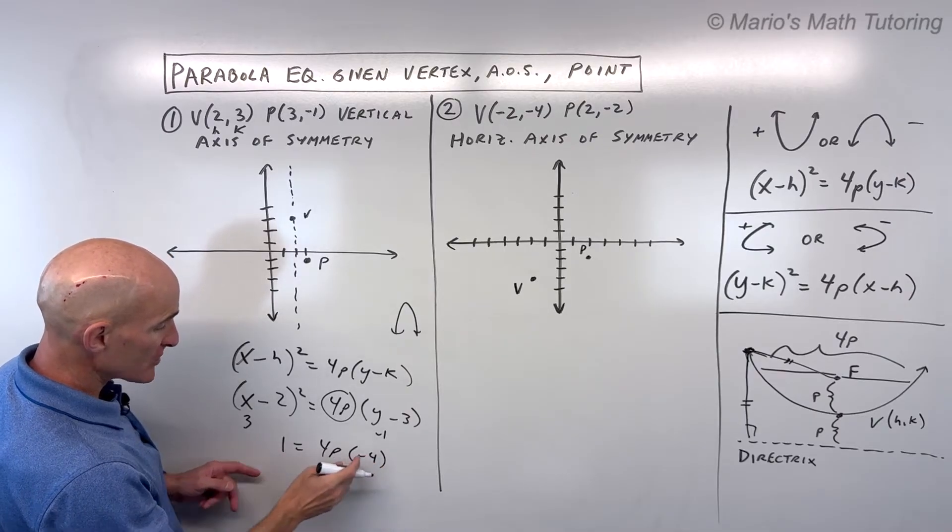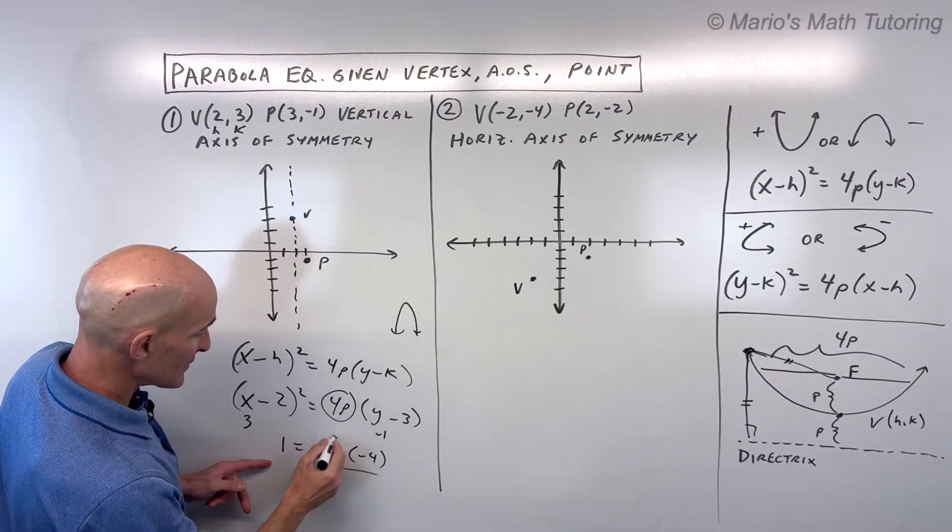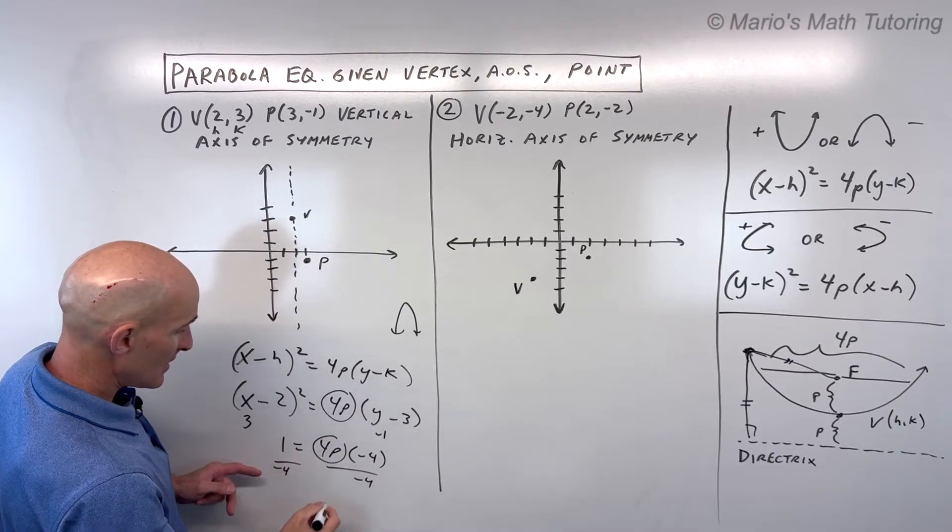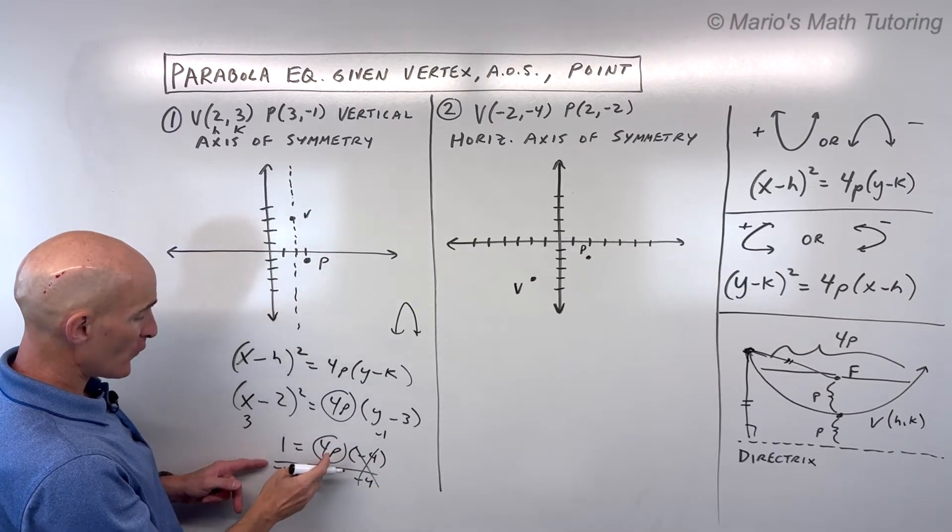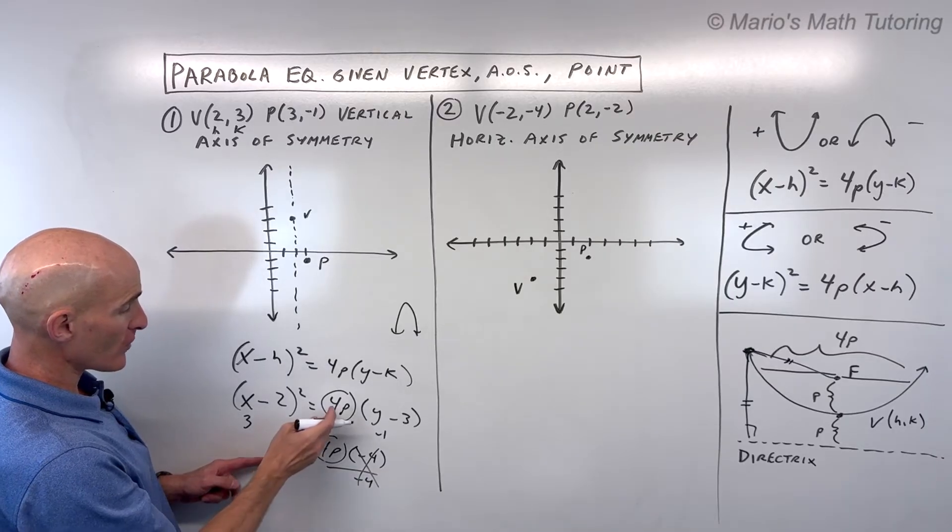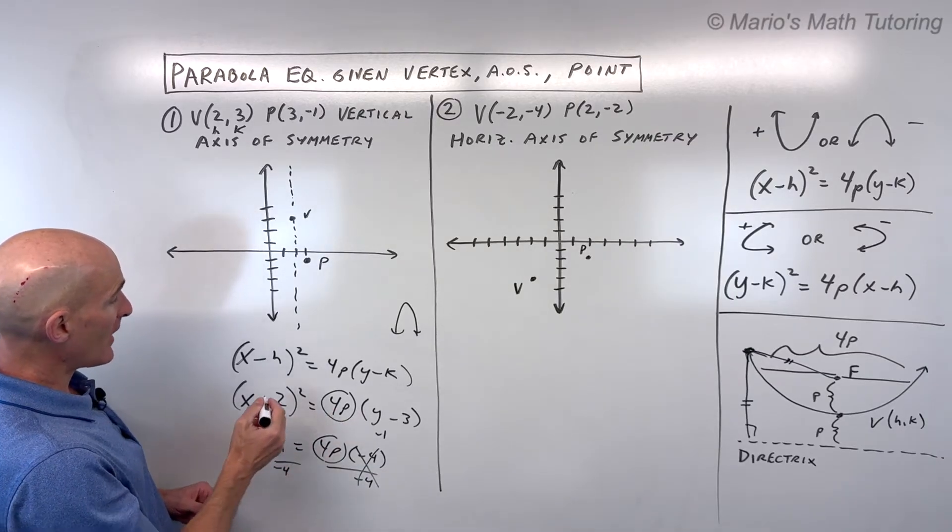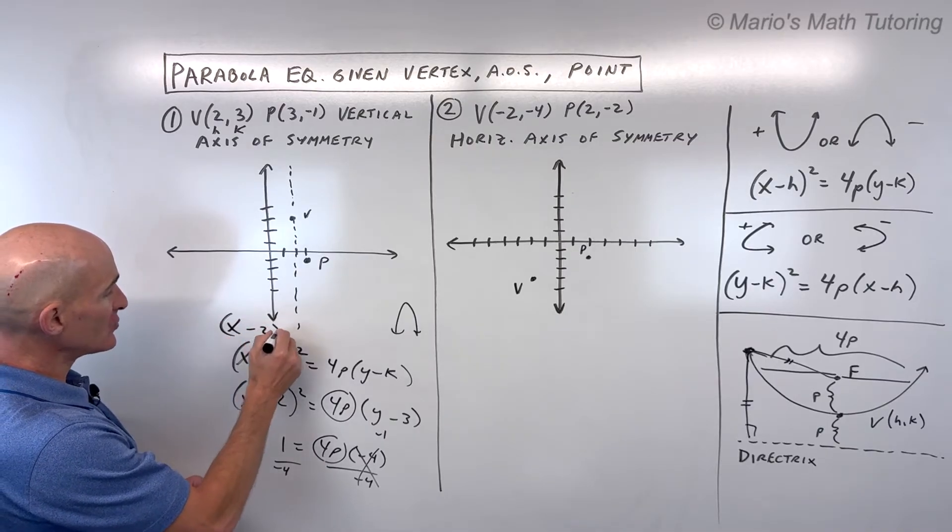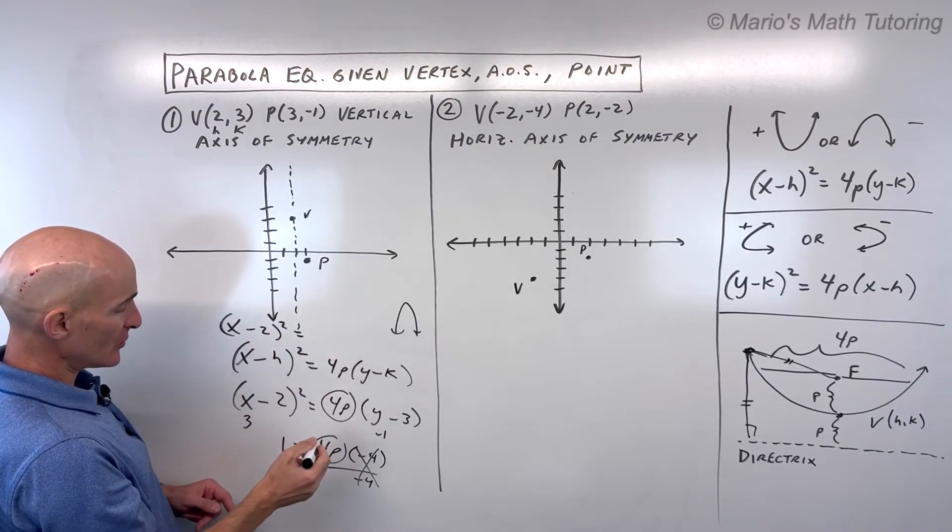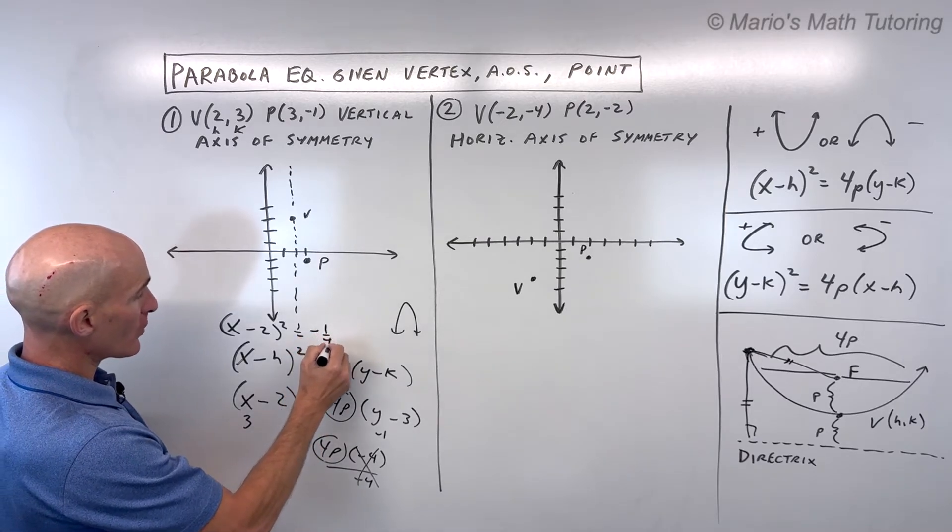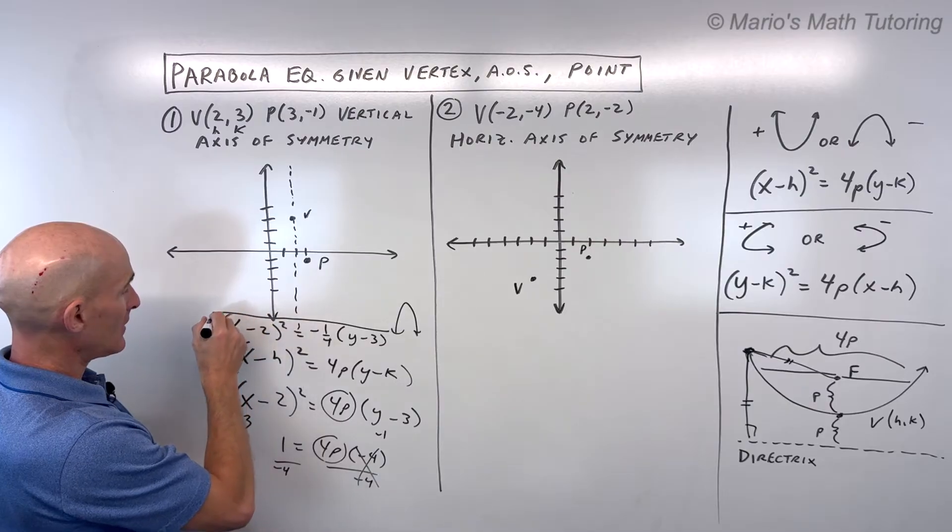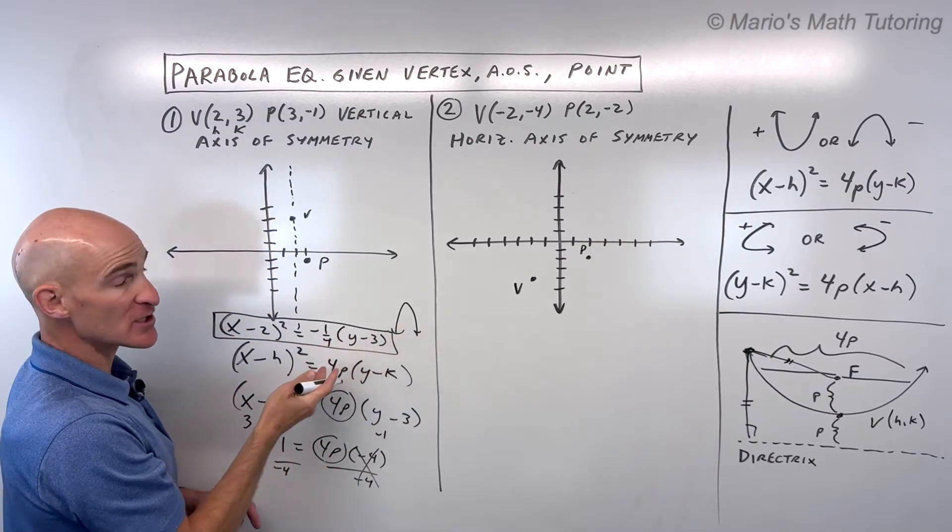And then what I'm going to do is I'm going to divide both sides by negative 4, just to get this 4P by itself, because that's what we're looking for. Divide both sides by negative 4. Okay, so 4P is equal to negative 1 fourth. That's what's going to go right here. So final form of this equation will look like this: (x-2)² = -1/4(y-3). And that's the standard form of the equation of your parabola.